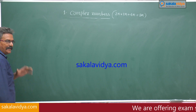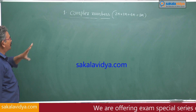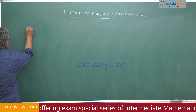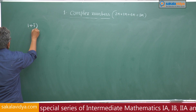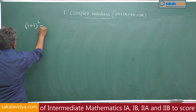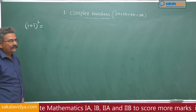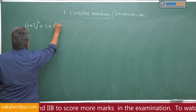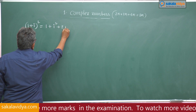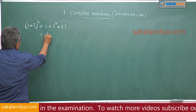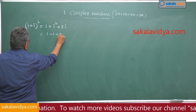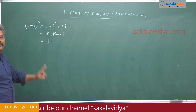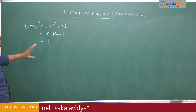Now, some hints while doing the problems. For example, if you want to find out (1+i)², what is (1+i)²? That is 1 + i² + 2i. We know i² is minus 1, so 1 minus 1 plus 2i — these cancel, we have 2i. Very simple to remember: (1+i)² is 2i.